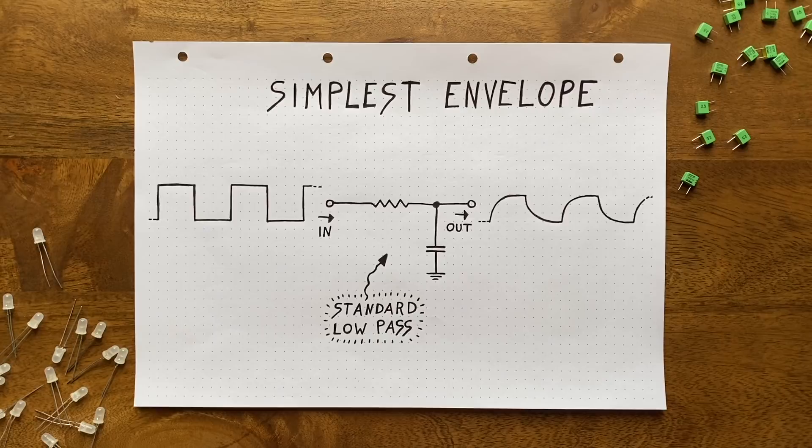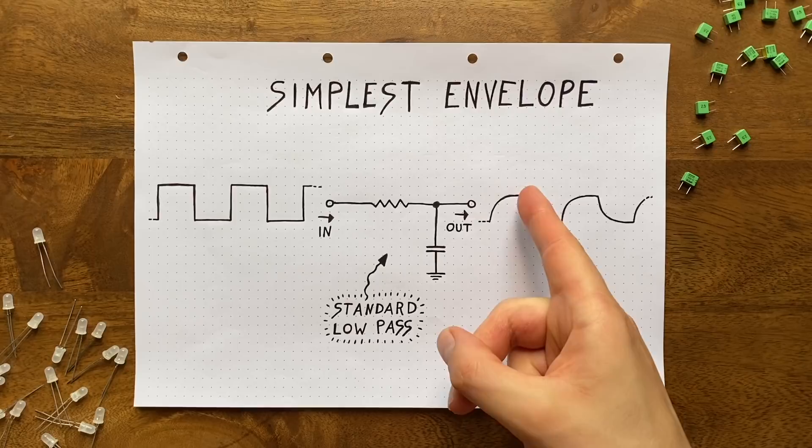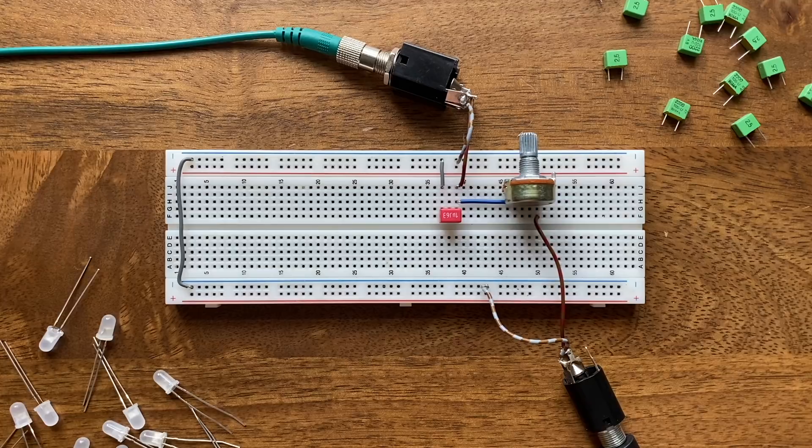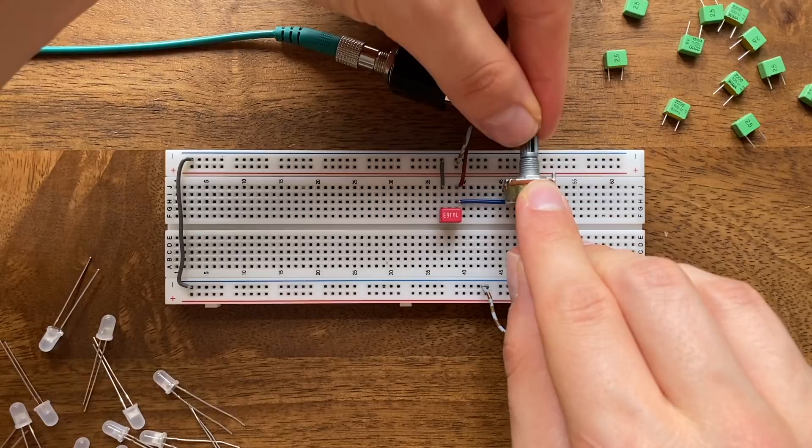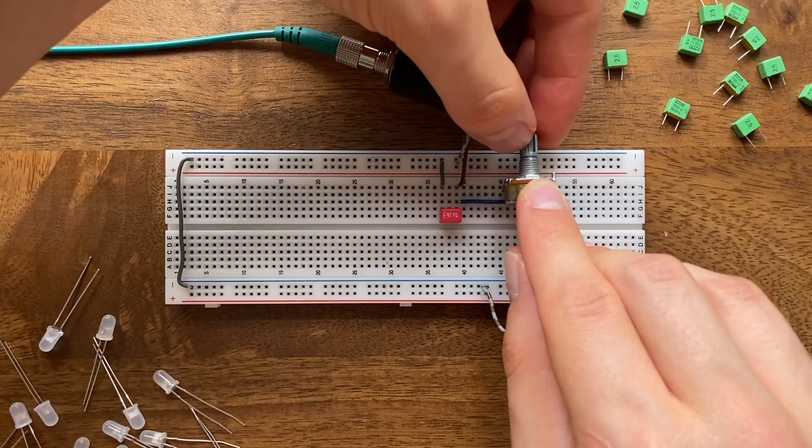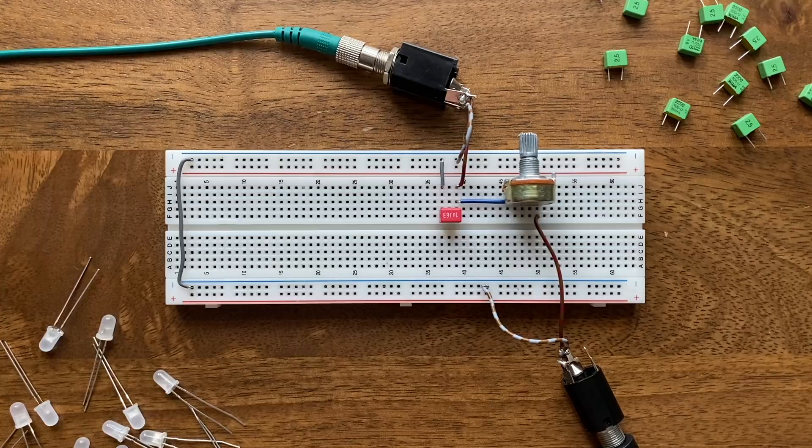This way we can adjust the resistance and thereby the speed of the charging and discharging process on the fly. A one megaohm pot should give us a decent enough range here. Let's hear how that sounds. And yeah, we can now dial in a more or less intense effect.